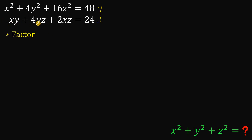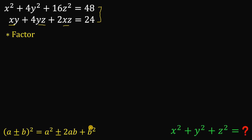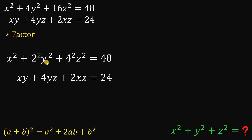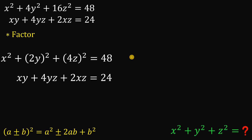Since we have products of x and y, y and z, and x and z, we will use the concept of the perfect square trinomial. If we expand (a ± b) squared, we get a squared ± 2ab plus b squared, where the middle term is a product of a and b. Notice that 4 is 2 squared and 16 is 4 squared, so 4y squared can be rewritten as (2y) squared, and 16z squared as (4z) squared.